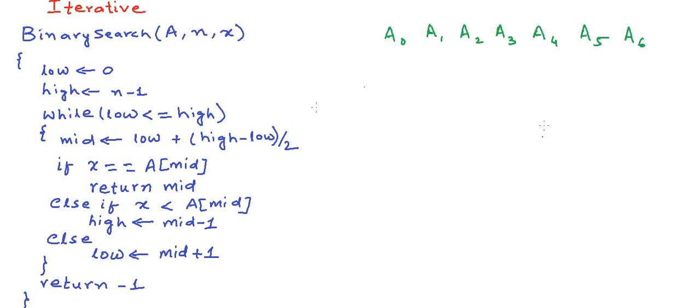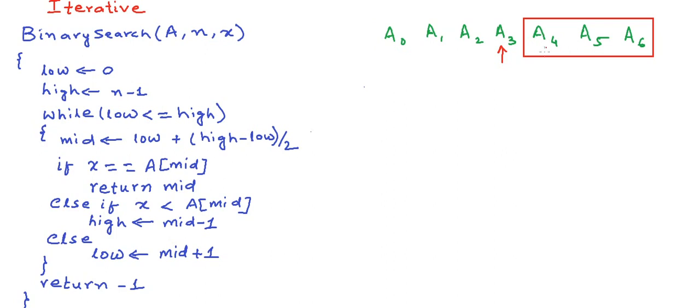What we are essentially doing is that if we have a sorted array with elements in increasing order, we first compare x with the middle element. If x equals the middle element, we're done. If x is less, it must exist before this element in the left section. If x is greater, it must exist after the middle element in the right section. We keep repeating this process in the new segment until either we find x or we cannot divide the search space any further. Binary search is a typical example of a divide and conquer algorithm in which at each step we are dividing the problem in half.